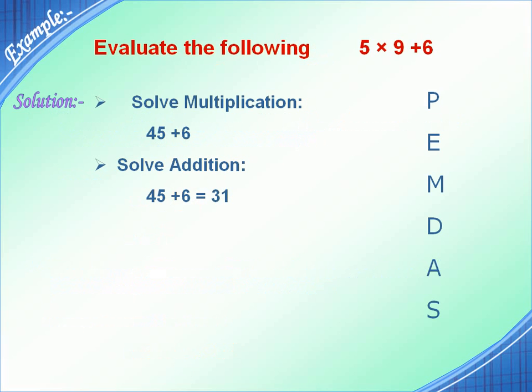Now let's see an example: how to evaluate 5 × 9 + 6. Use the simple rule PEMDAS. Here we will solve multiplication first because M comes before A in PEMDAS, and we will get 45 + 6. Now next step is to solve addition, and we will get 51.